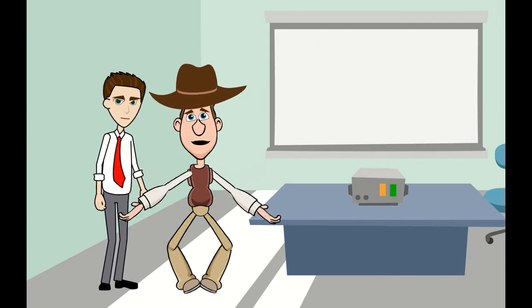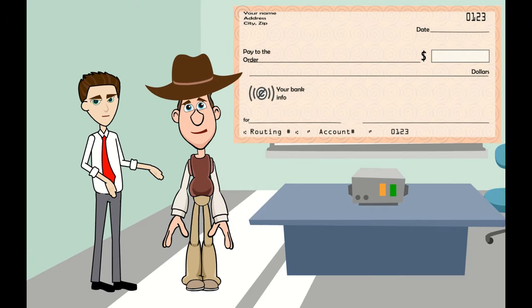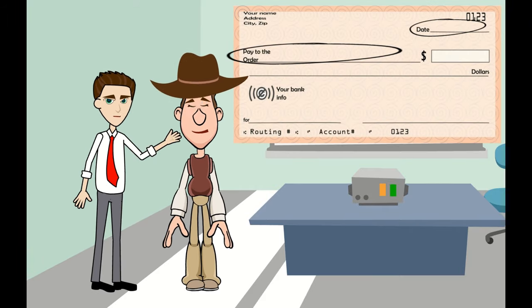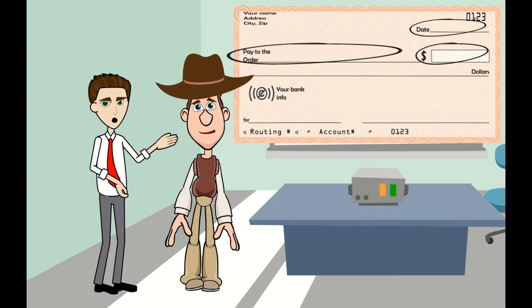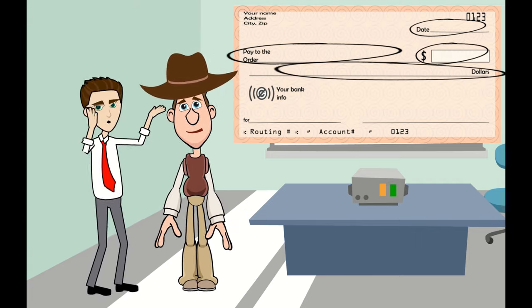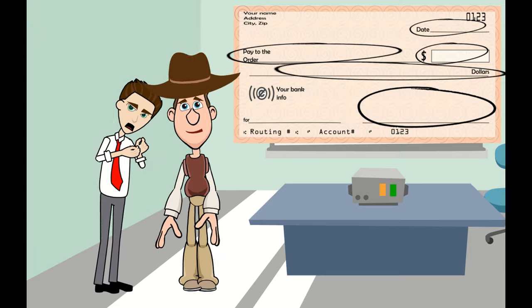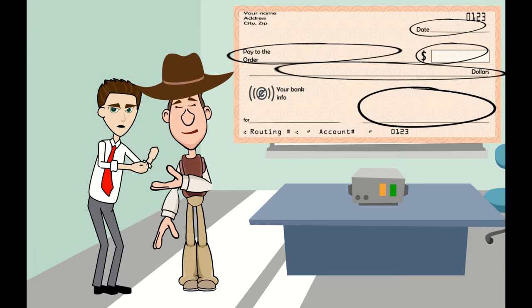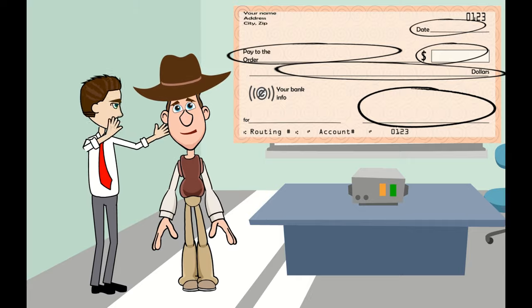But how do I even write a check? Well, you just need the date, the name of the person you're paying the money to, the amount of money you're paying to that person in numbers and in words, and the most important part, your signature. Because without the signature, your check will not go through and you will not be able to pay that person.